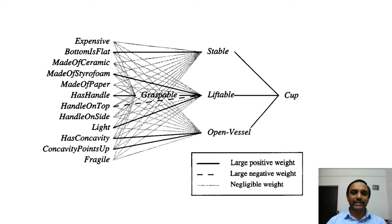For weight assignment, the thick lines represent inputs with large positive weights, as those features are mainly required to get the properties of the cup. These are: bottom is flat, has handle, light, has concavity, and concavity points up. There is one more feature: 'handle on top' represented with a dotted thick line. If a cup has a handle on top, it is not possible to drink from it, so that instance is irrelevant. For that we assign a large negative weight, and for remaining negligible-effect features, we assign negligible weights.